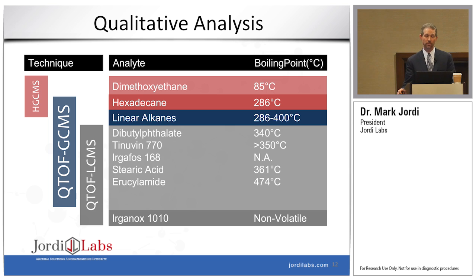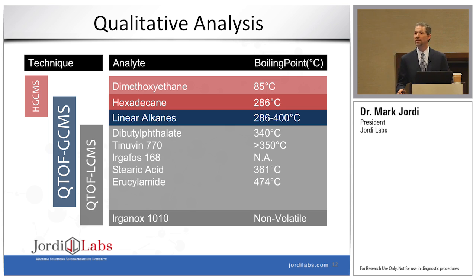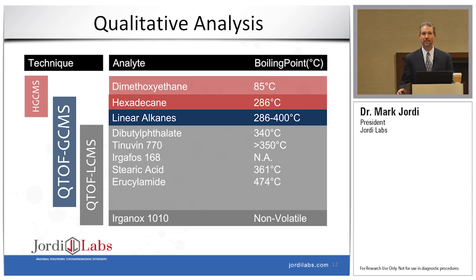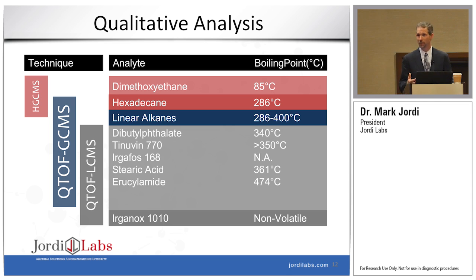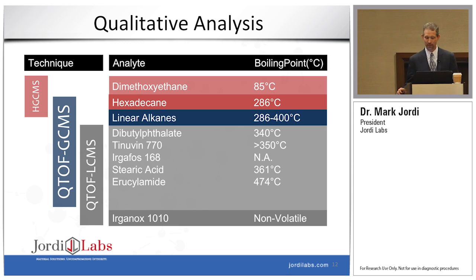In this particular figure, what I'm showing is that if I were not to run Headspace GCMS, I would be missing the most volatile components. If I didn't run QTOF GCMS, I'd be missing those semi-volatile components. And if I don't run QTOF LCMS, I'm going to miss those low-volatility components that are very polar. So it's important to run a variety of techniques that cover the full range of polarities and volatilities.